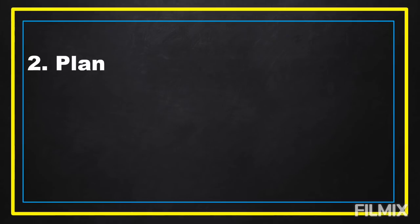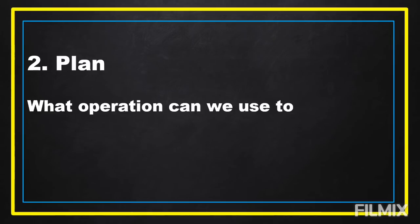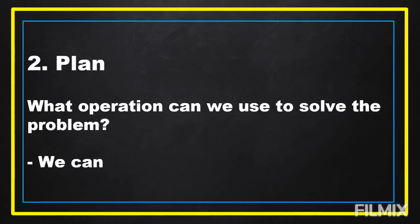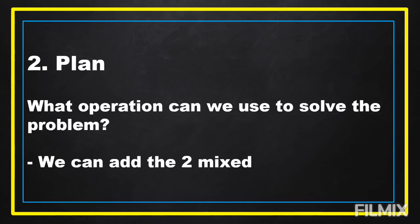The next step is to plan. What operation can we use to solve the problem? In our problem, we're going to add two mixed fractions: one and one-fourth kilograms of beef and three and one-half kilograms of chicken.